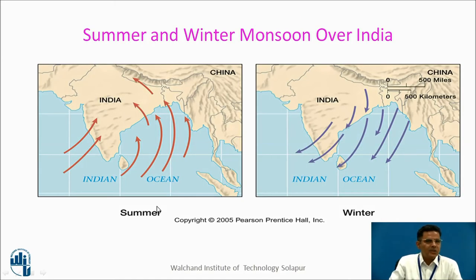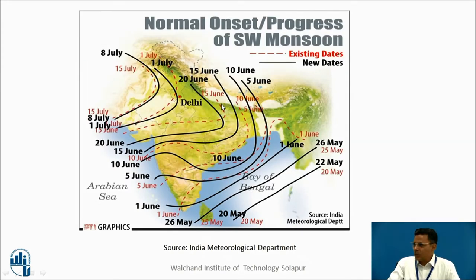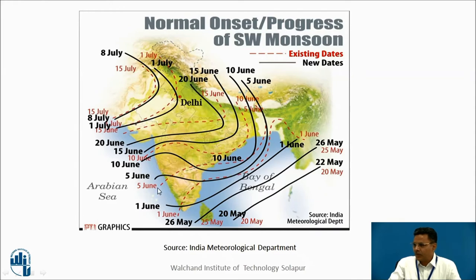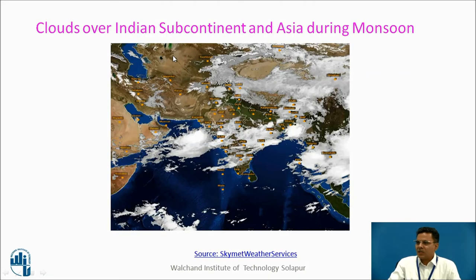Indian summer monsoon brings rainfall in June, July, August, and September. The winter monsoon brings rainfall to South India especially in the months of November and December. This figure shows the normal onset dates of the South West monsoon. It reaches Kerala on 1st June, progresses along a line by 5th June, arrives in Mumbai, Maharashtra, around 10th June, and ultimately reaches Rajasthan by 8th July. When the monsoon is active, this is a typical cloud cover over the Indian subcontinent.